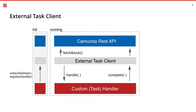The clients work like this: they know what they can do by the name of the topic, and they make a REST call called fetch-and-lock — wrapped in a JavaScript API you'll see shortly. This tells the engine how many tasks it can grab at once, how long it wants to lock the task for, and the topic itself. Once it has the lock, the external task handles the work and sends it back. The happy path is that the external task grabs the work, does the work, and completes it.